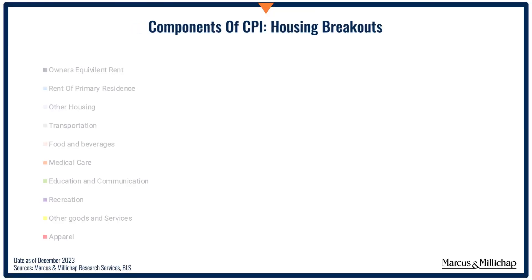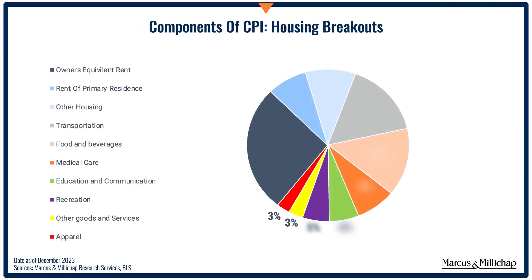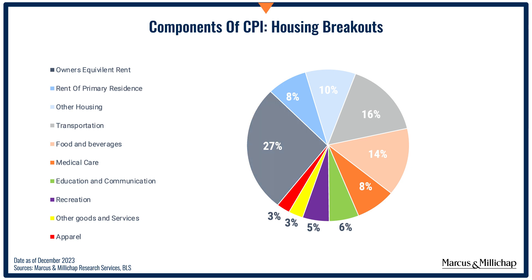Now, that seems a bit out of proportion to me. On average, U.S. households only spend 25 to 30% of their income on housing. But when you dig one layer deeper into the housing costs, you find that 8% of the total CPI inflation number is basically driven by rent growth. But another 27% of CPI is driven by something called owner's equivalent rent.